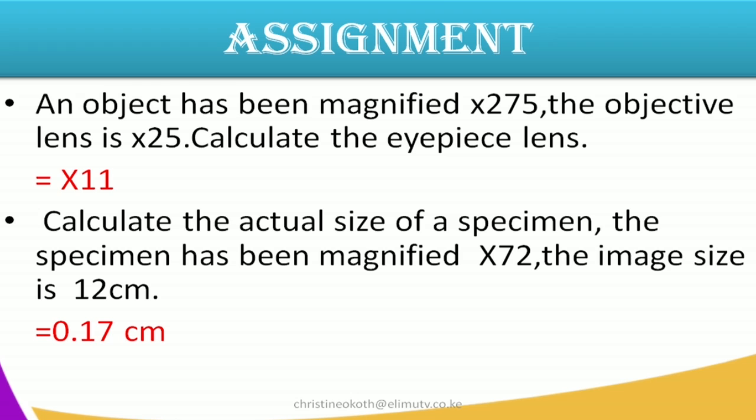Then question number two: calculate the actual size of a specimen. The specimen has been magnified 72 times and the image size is 12 centimeters. To get the actual size we take the image size divided by magnification. So we take 12 divided by 72 and you end up finding 0.17 centimeter. The actual size of this specimen is 0.17 centimeter.